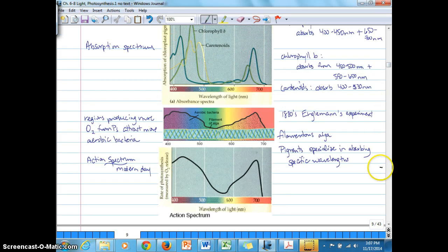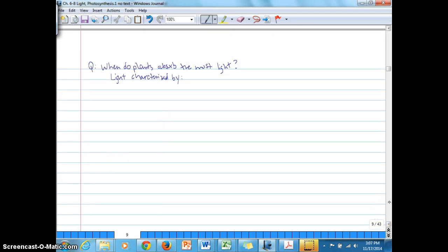So our next topics are going to be looking at how light, the quality of light that the plants are exposed to during the day, which certainly varies from sunrise to sunset. So the question we're asking is, when do plants absorb the most light? And we can answer that question by characterizing light, which is what we're going to concentrate on in the next video clip.